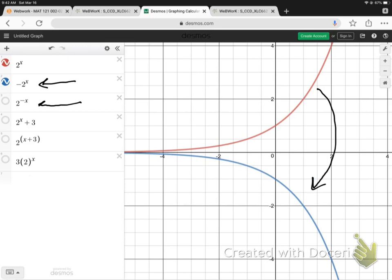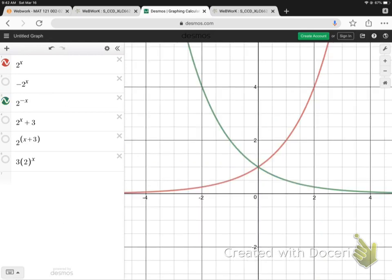The next one is going to be a reflection over the y-axis. Let's take a look. There it is. 2 to the negative x. Reflection over the y-axis. Do remember that 2 to the negative x is the same as 1 half to the positive x.